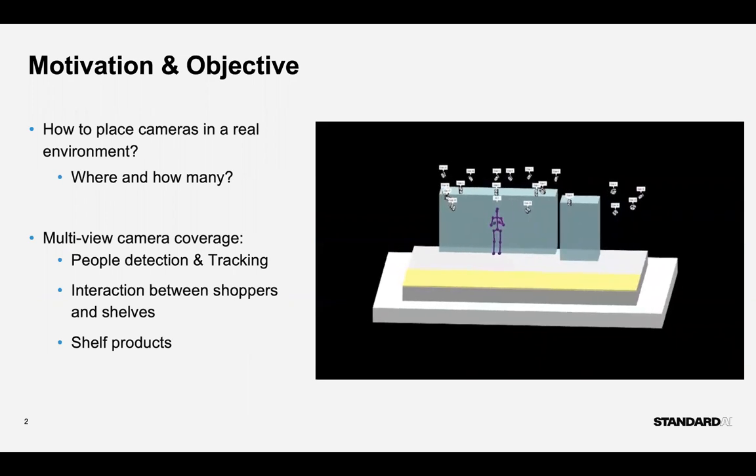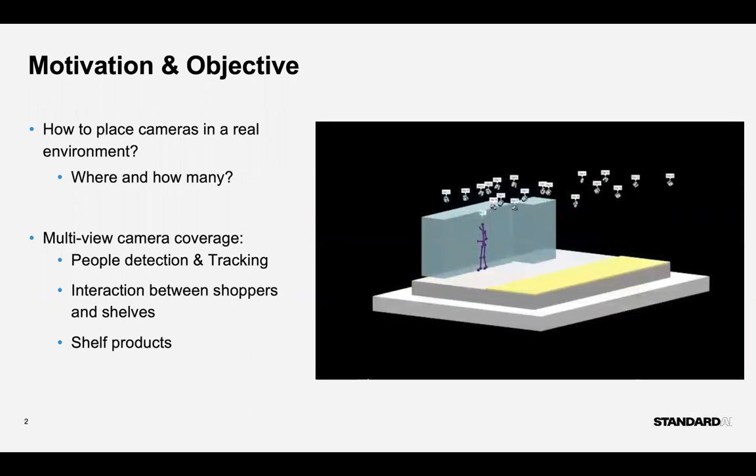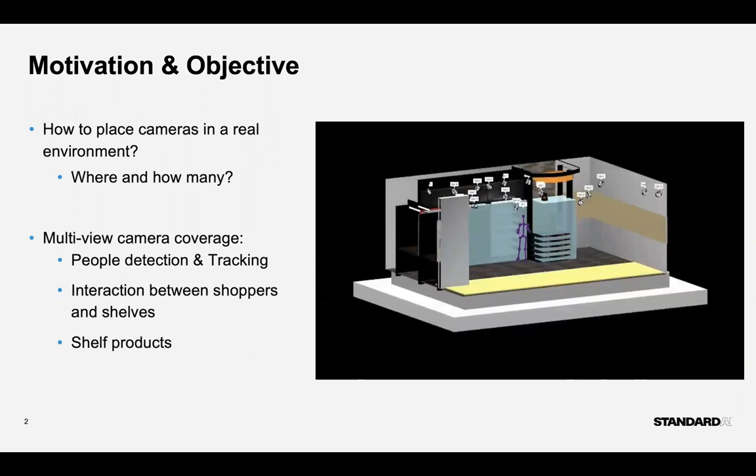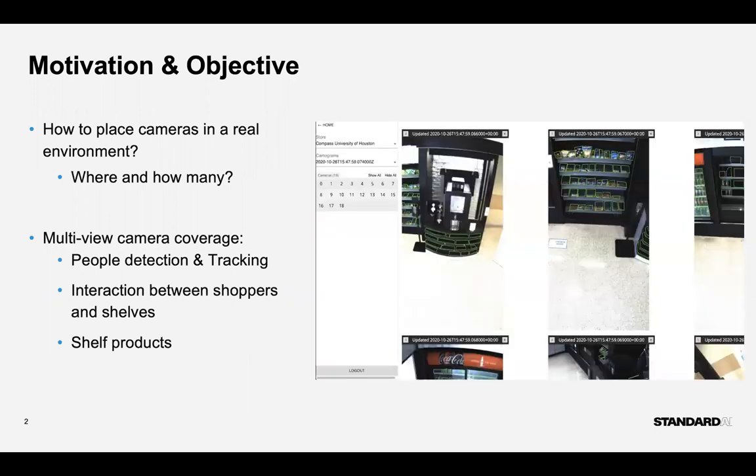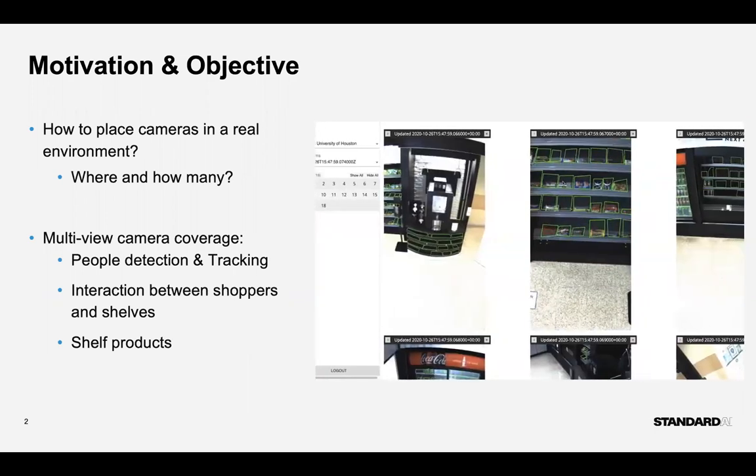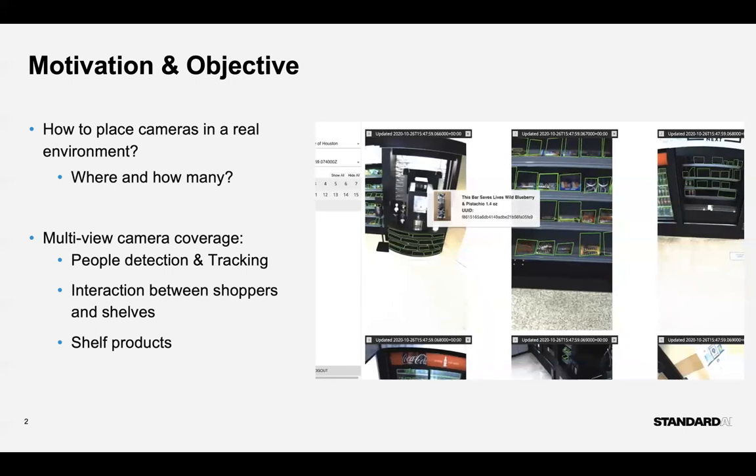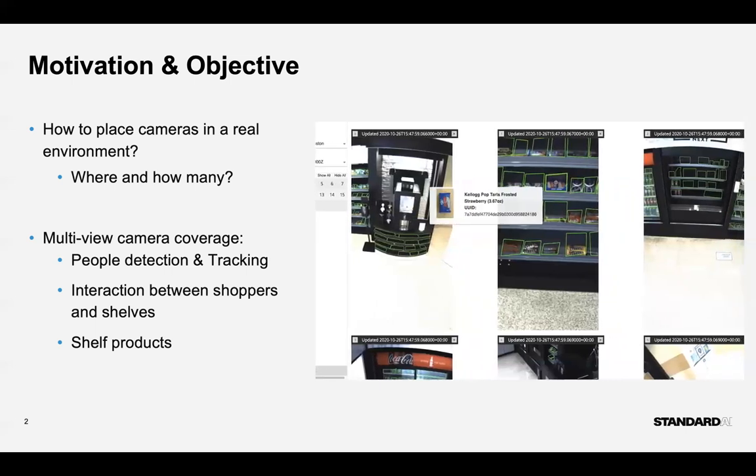These underlying tracking and detection functionalities are heavily reliant on efficient camera placement to ensure unoccluded views and complete coverage of the store environment. Thus, the objective of this work is to develop an optimization framework for camera placement which can ensure that the underlying systems and functionalities can operate with high accuracy.